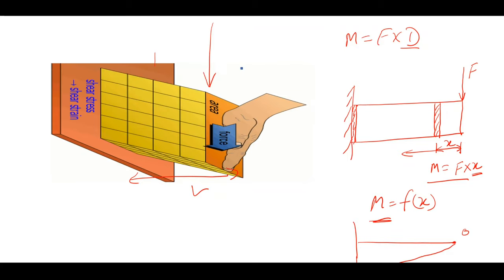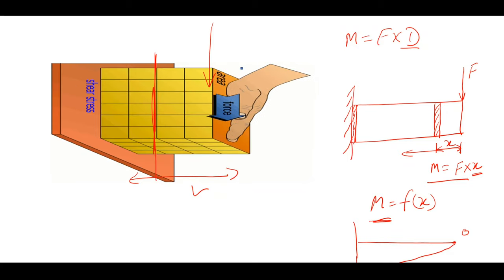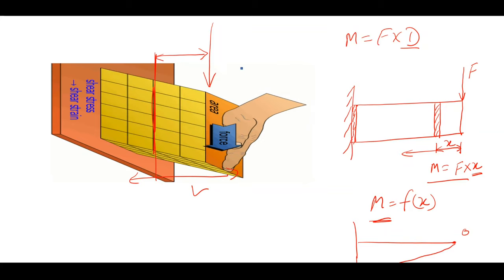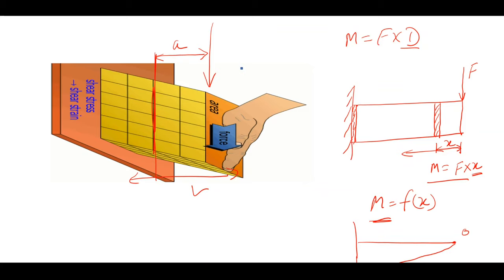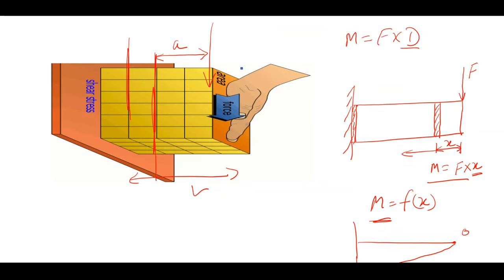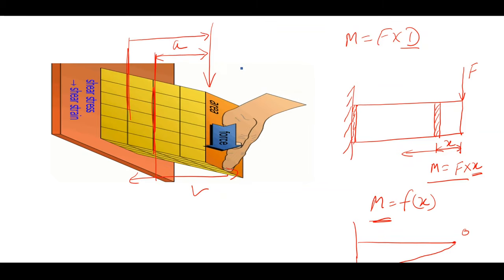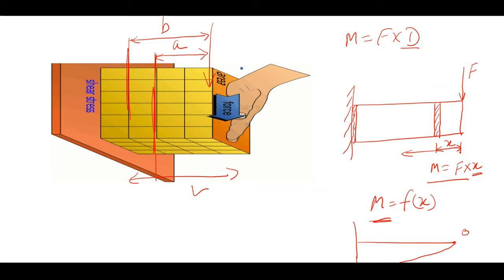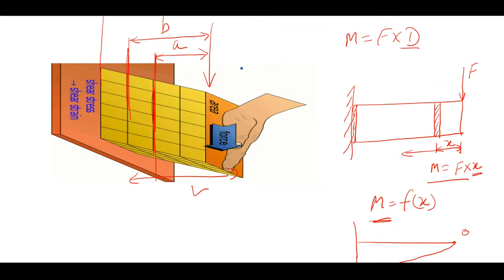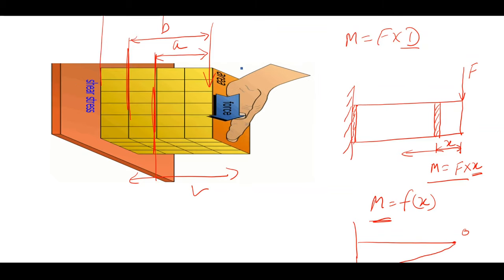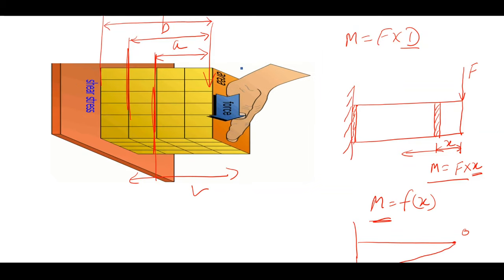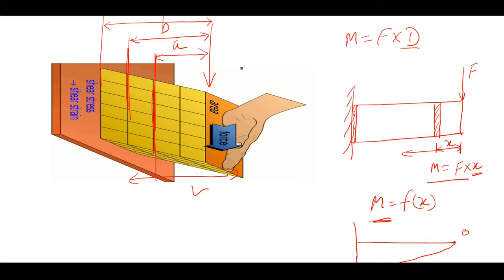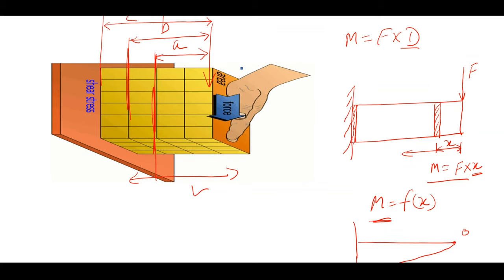For a given section at distance A from the force, the moment is F times A. For a section at distance B, the moment is F times B. At the extreme fixed layer, the moment is F times C. This is how the moment varies with the position of the section along the beam.